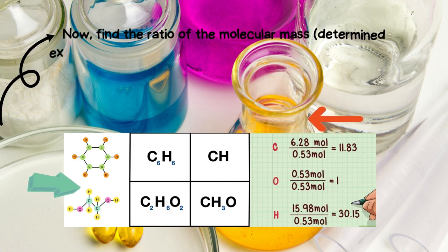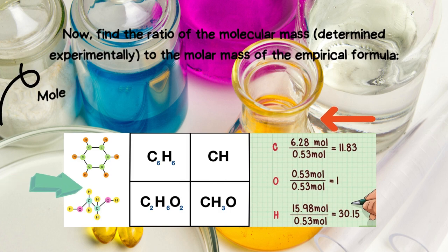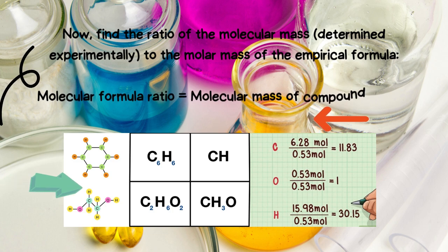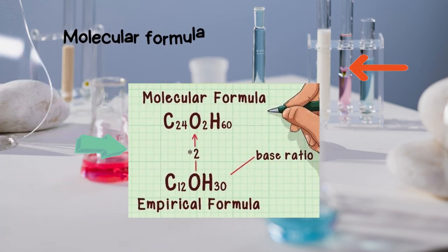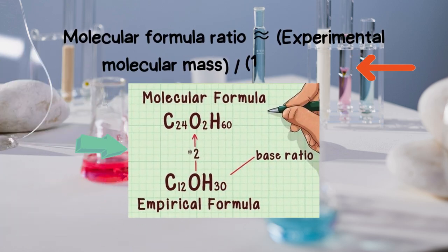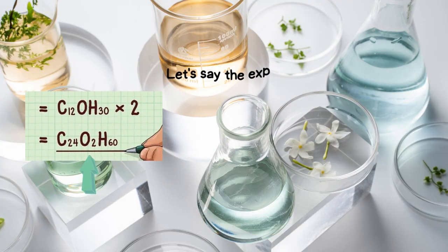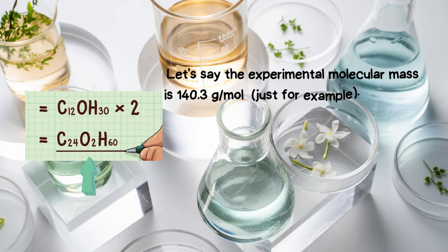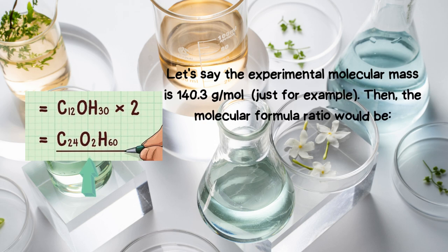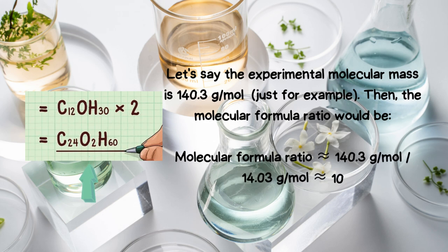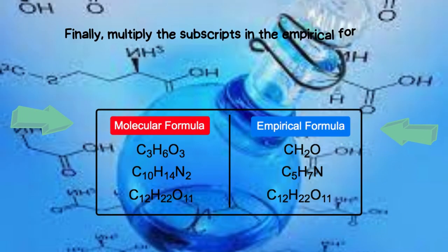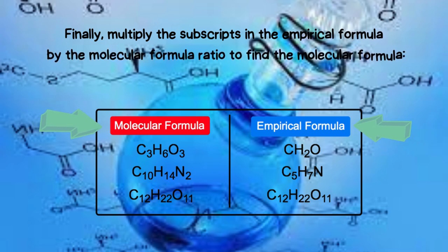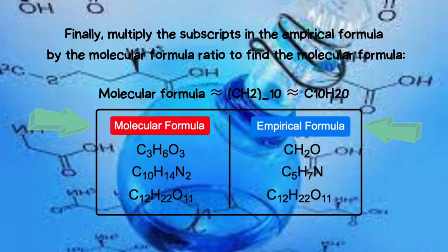Now find the ratio of the experimentally determined molecular mass to the molar mass of the empirical formula. Molecular formula ratio equals molecular mass of the compound divided by molar mass of the empirical formula. Let's say the experimental molecular mass is 140.3 grams per mole. Then the molecular formula ratio equals 140.3 grams per mole divided by 14.03 grams per mole = 10. Finally, multiply the subscripts in the empirical formula by the molecular formula ratio: CH₂ × 10 = C₁₀H₂₀.